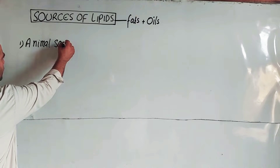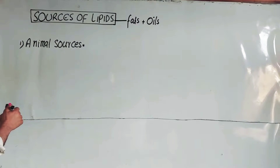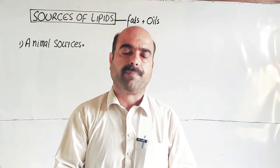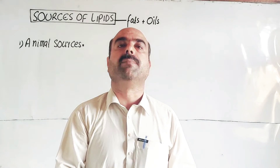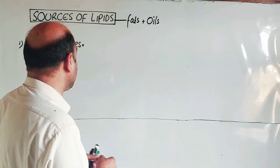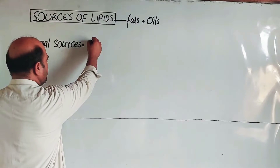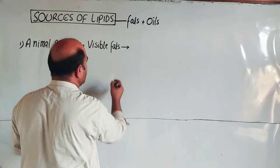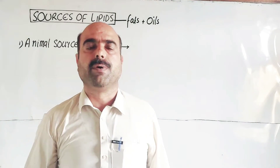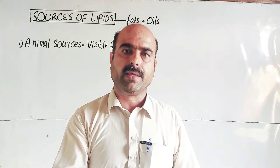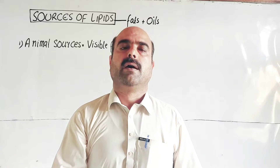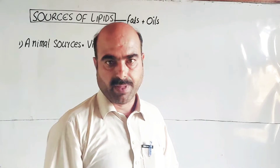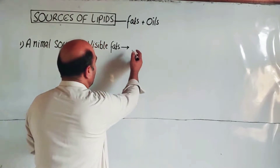Animal sources: what are the visible fats? The first one is the visible fats. Under the skin of animals, we can see the adipose tissue. Beneath the skin, adipose tissue stores extra amounts of lipids in the form of energy. These are the visible parts of adipose tissues.